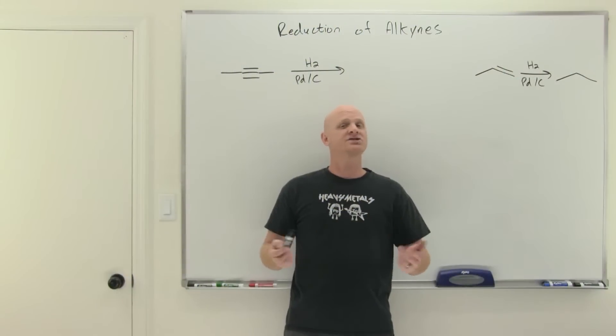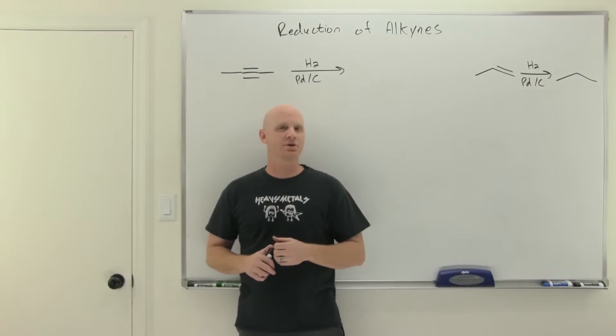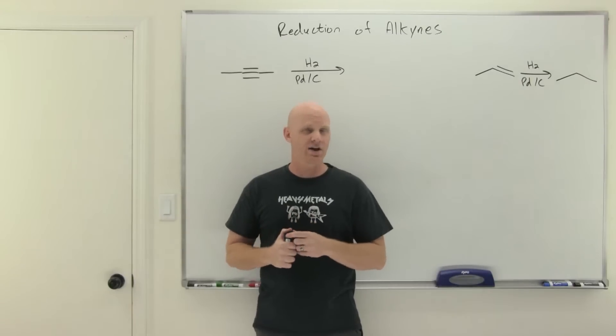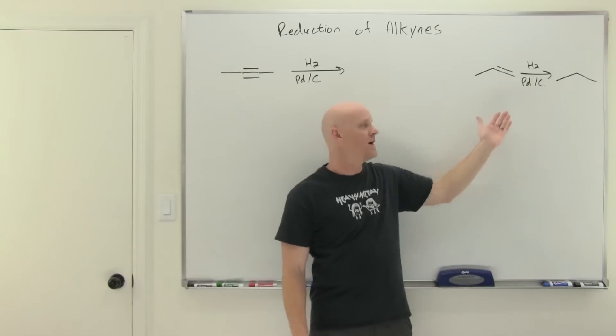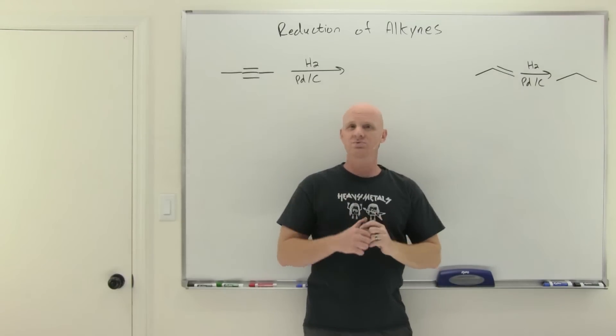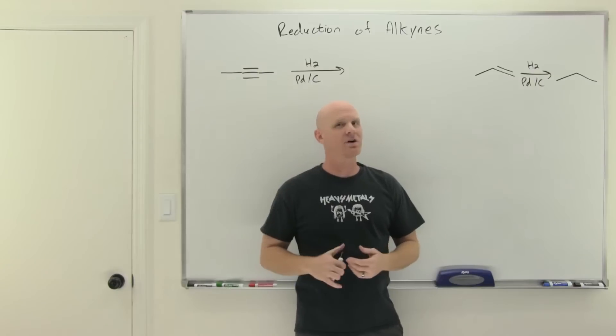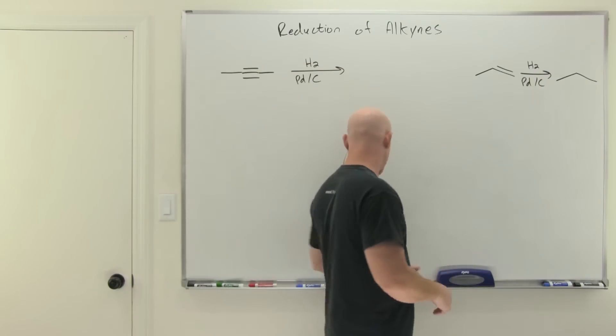Reduction of alkynes - it turns out we've got three different relevant reactions that are all considered reduction of alkynes, whereas with alkenes we only had one relevant reduction. We're going to start with that relevant reduction of alkenes, see that we have an analogous reaction with alkynes, and then a couple other reactions and alternative ways of performing something similar.